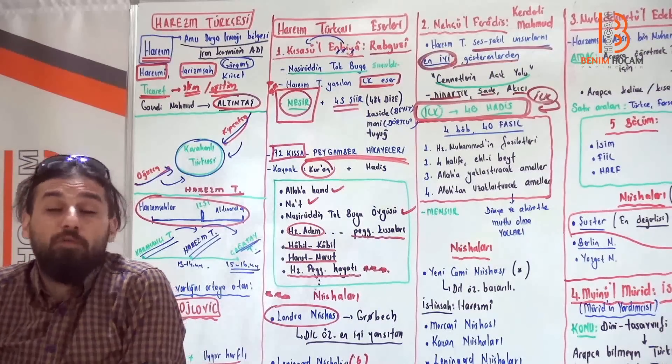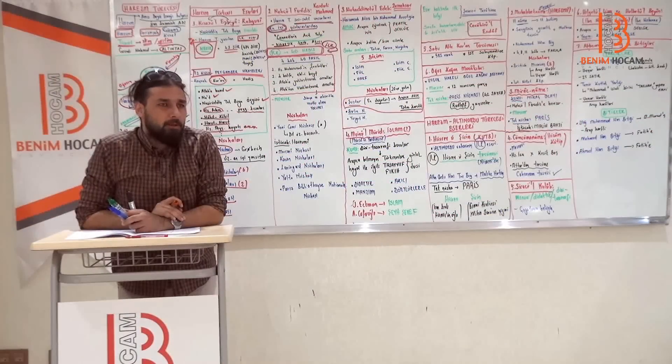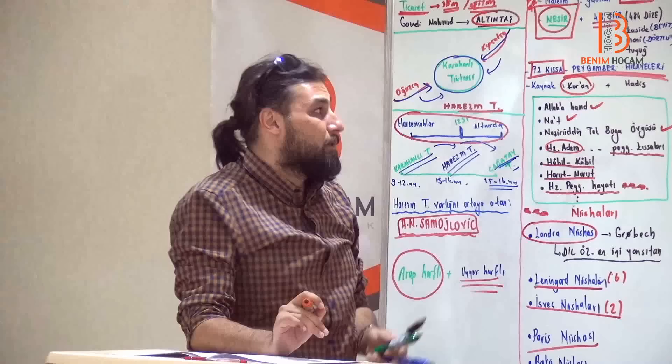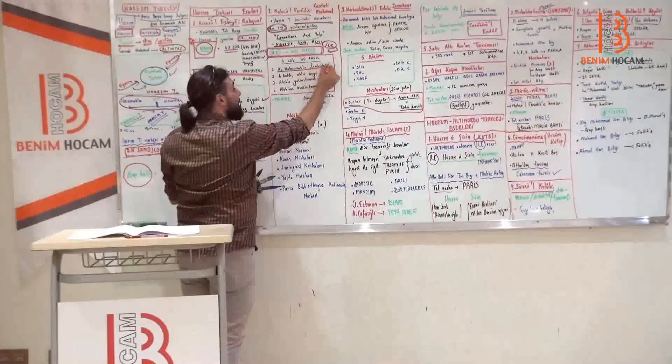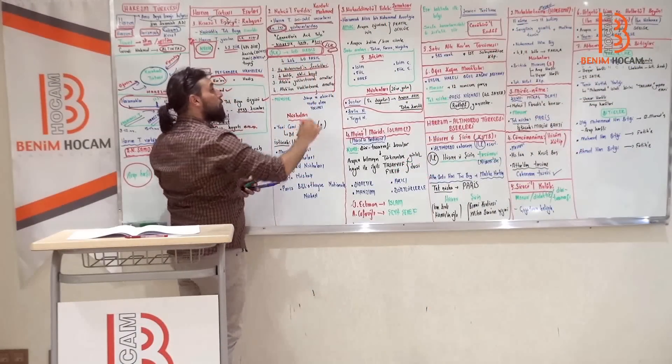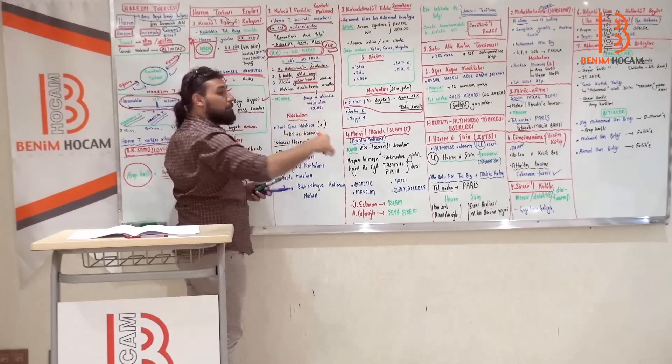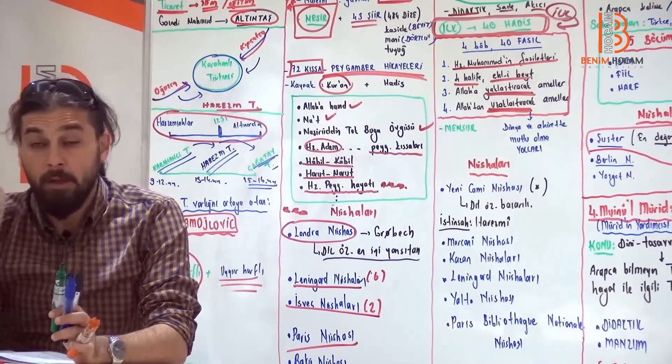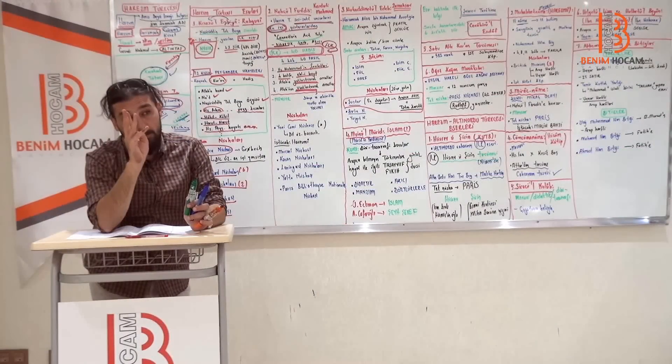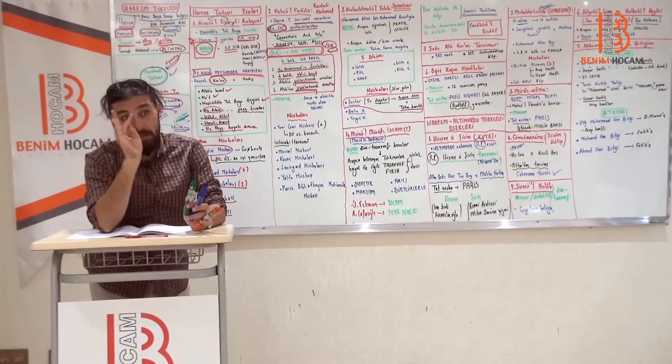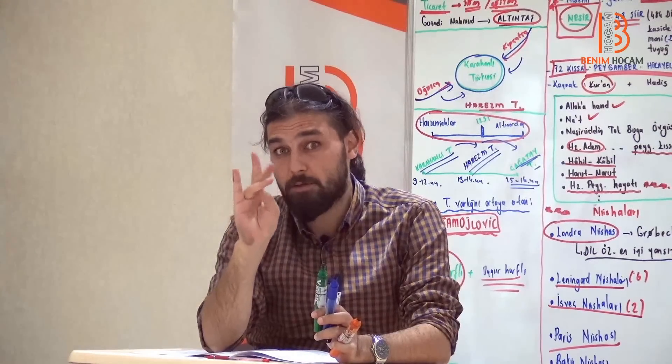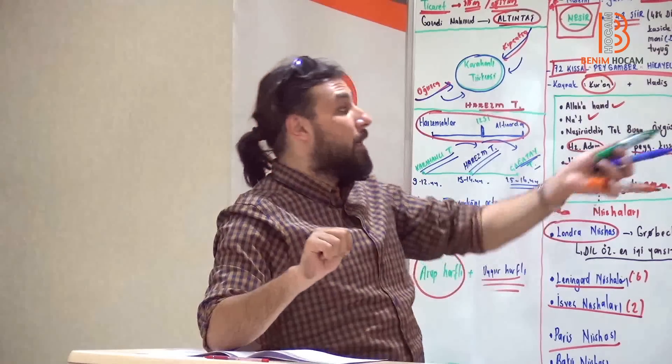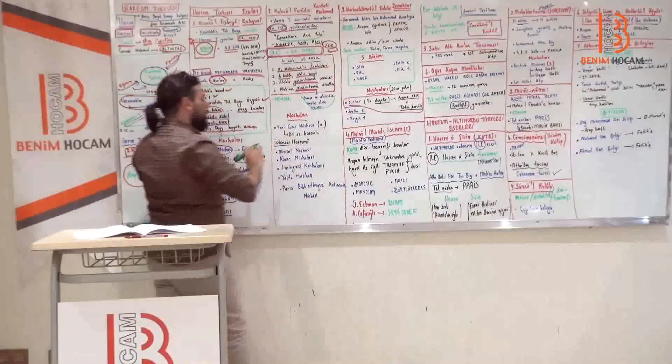Demek ki Türk Edebiyatı ilk 40 hadis örneğidir. 4 bab vardır. Her babta 10 fasıl vardır. O zaman çarpın. 4 kere 10, 40 sonucuna ulaştınız değil mi? Toplam 40 fasıldır o zaman. 1- Hazreti Muhammed'in faziletleri. 4 halife ehli beyt. Sonra Allah'a yaklaştıracak ameller. Yap. Allah'tan uzaklaştıracak ameller. Yapma. Hazreti Peygamberimizin. Sonra ne var arkadaşlar? Direkt olarak ehli beyt ve 4 halife var. Sonra yapacakların Allah'a yaklaştıracak ameller. Yapmayacakların Allah'tan uzaklaştıracak amellerle dünya ve ahirette nasıl mutlu olunur onu söyledi.